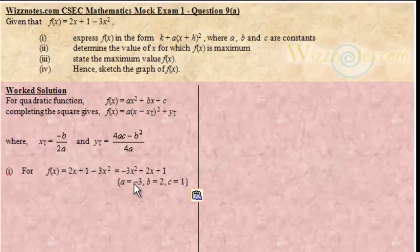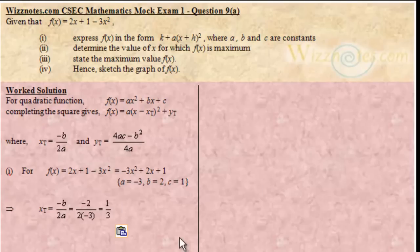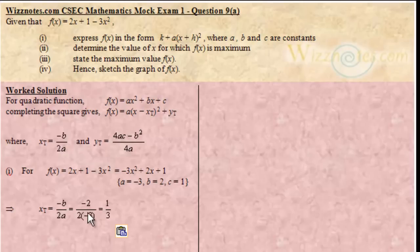a is the coefficient of x squared, which is negative 3; b, the coefficient of x, is 2; and the constant term is 1. So applying the xt formula: xt is going to be negative b divided by 2a, so it's negative 2 divided by 2 times negative 3. This negative cancels that negative, so the result is positive. Then 2 divided by 2 is 1, so the result is 1 third. So xt is 1 third.